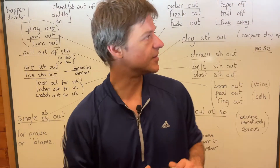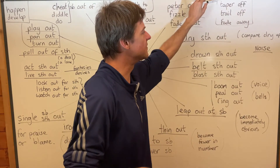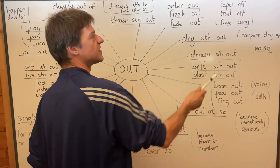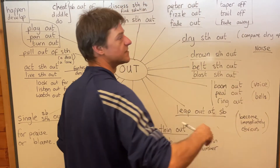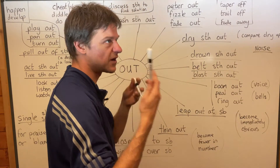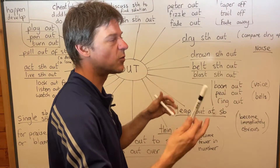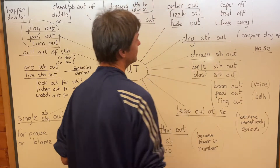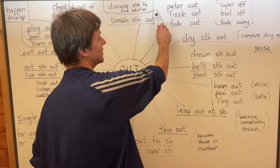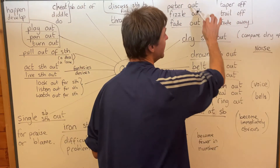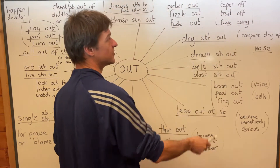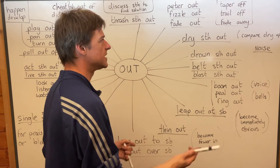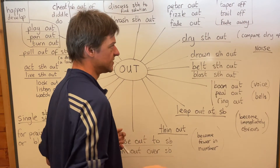All three of them are very similar to three other phrasal verbs. You can say 'his voice trailed off,' meaning he got gradually quieter and quieter and then disappeared. You can say 'his voice tapered off,' just like you can say 'his voice petered out.' These three are synonymous — they all mean gradually get weaker and weaker and then disappear.